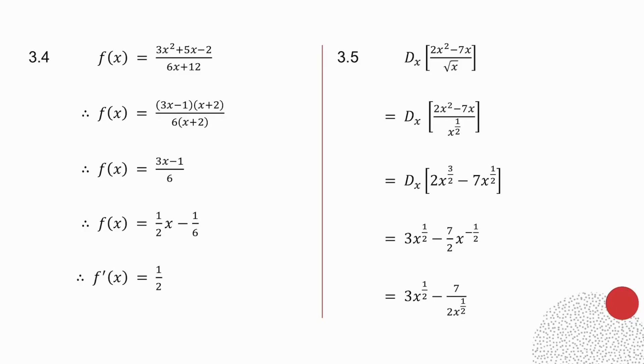3.5. I take the root x, and I write it as x to the half. And then I divide x to the half into each of the terms on the top. And remember, when you divide, you subtract the exponents.